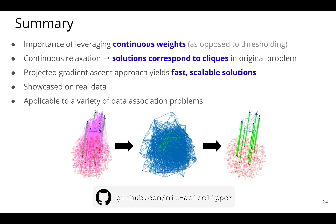So in summary, what we've talked about here is the importance of leveraging continuous weights, as opposed to just thresholding. So the problem formulation here really matters. And that's finding these dense cliques in the consistency graph. We also talked about the continuous relaxation. We talked about the importance of cliques, we showed results from our projected gradient descent approach that yields fast scalable solutions. We talked about how this can be applied on real data, and we showed that. And also this had a small discussion about how this is applicable to a variety of data association problems.